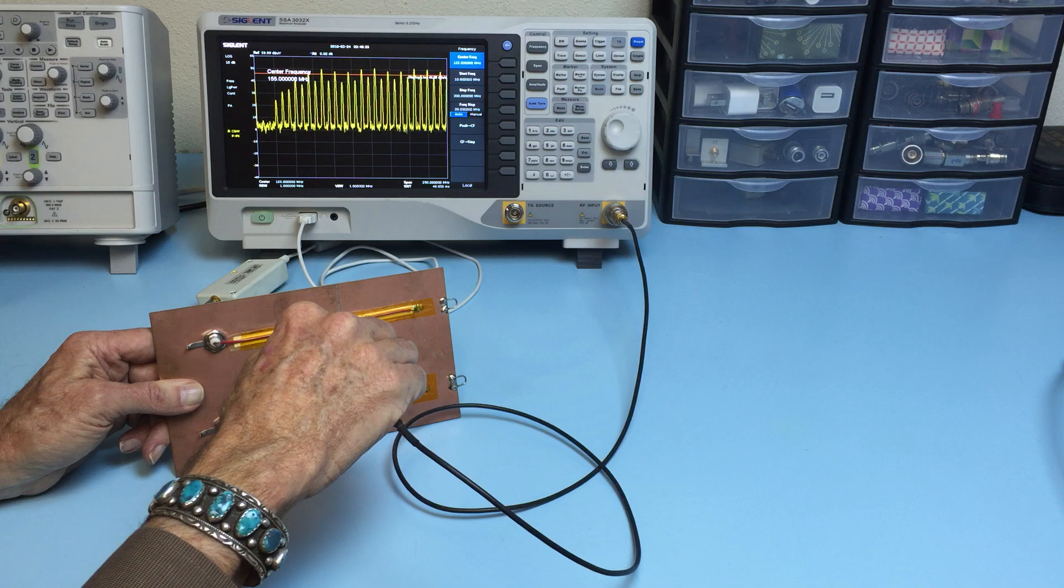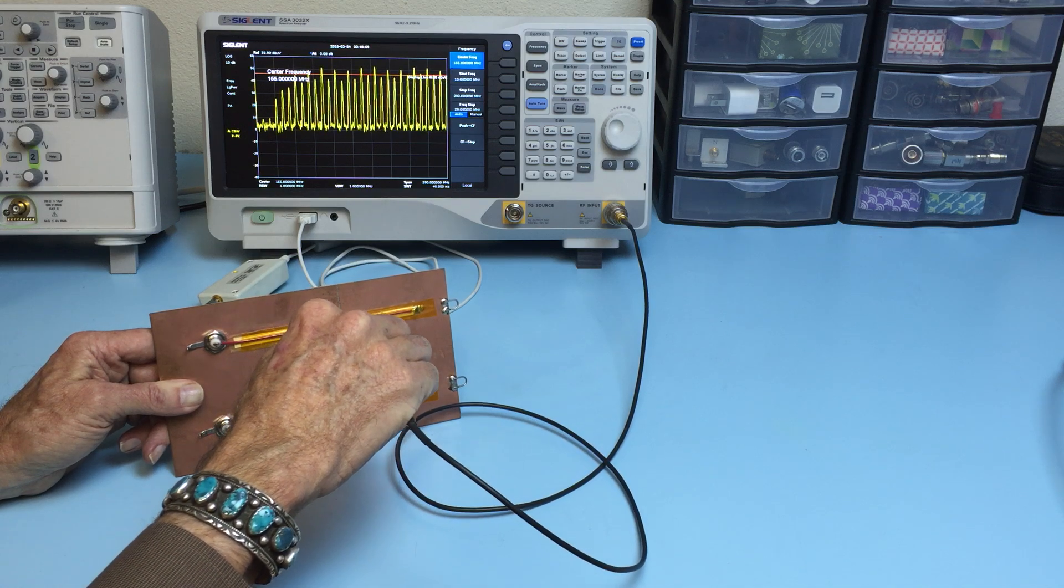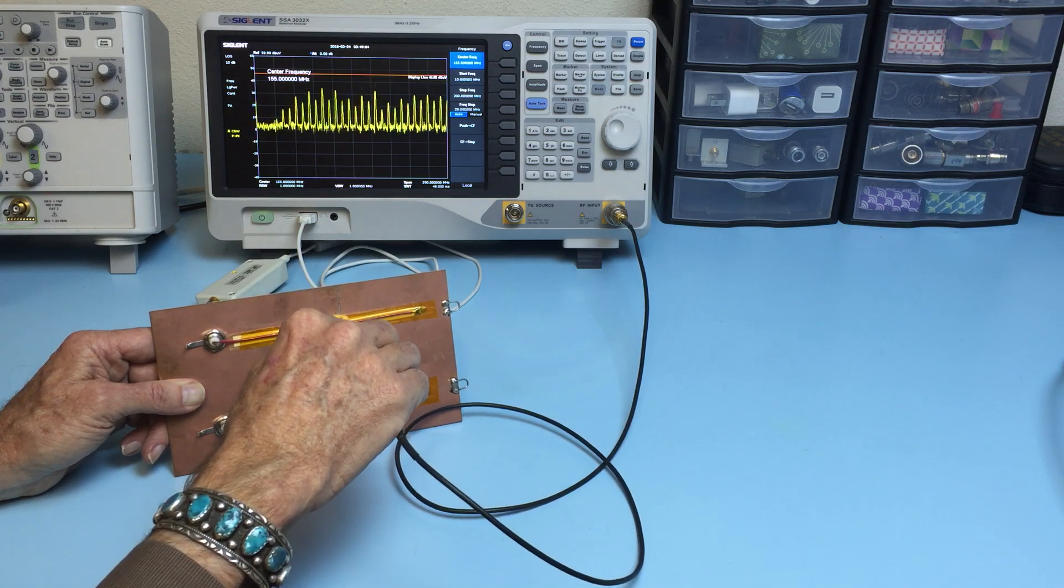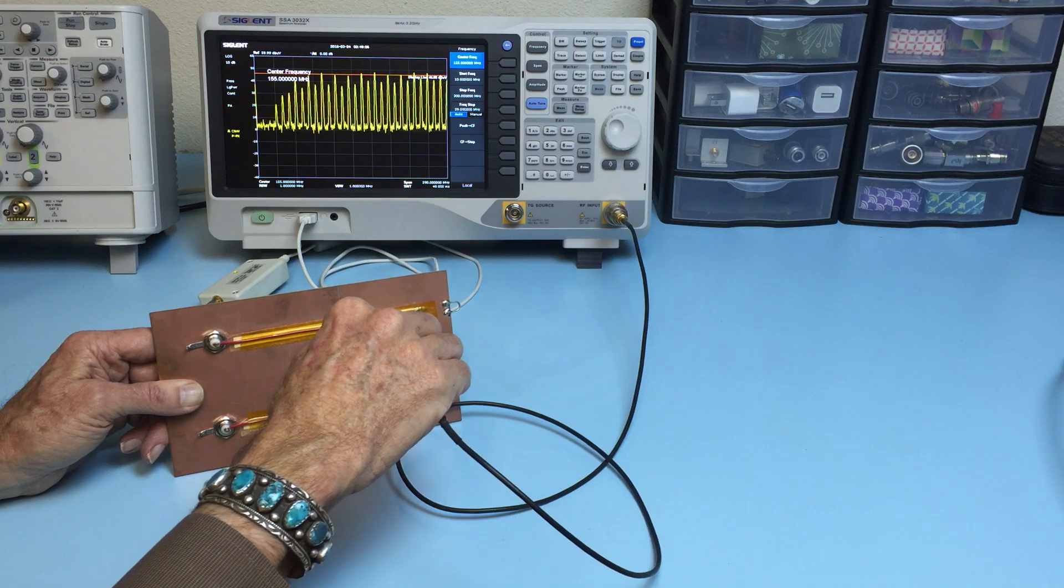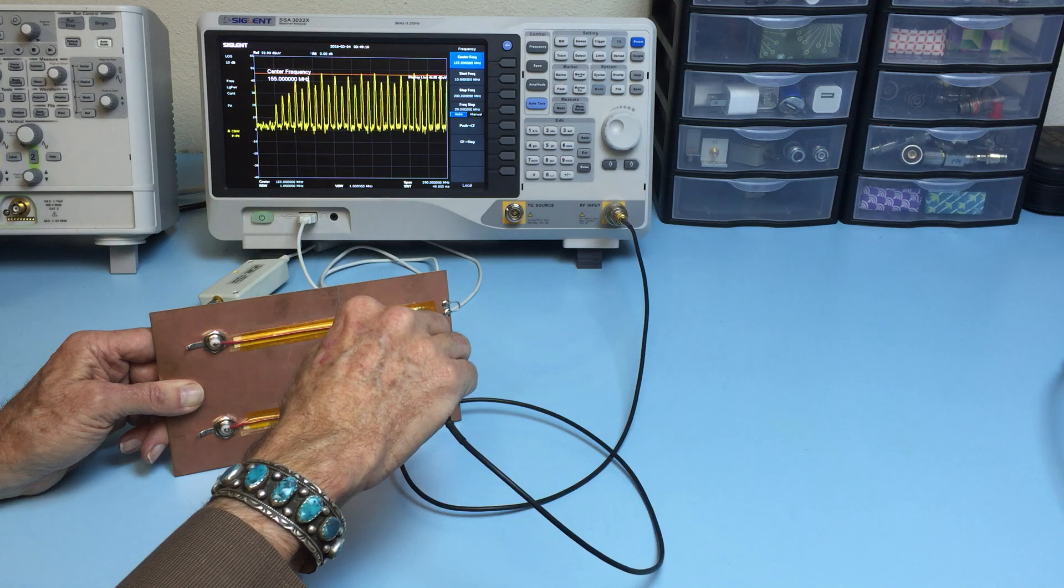But as we get closer to the gap you can see that it peaks about 5 dB higher. So you can see that there's energy across that gap there. And then it goes back down as we approach the resistive load.